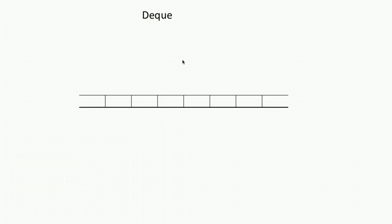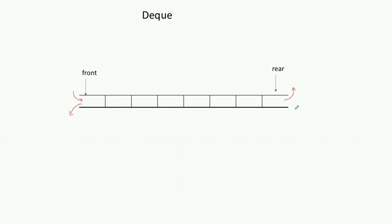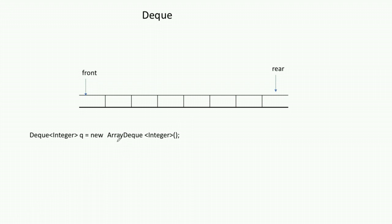Before moving towards the solution, let's first discuss how DQ works. DQ is a double-ended queue where we can insert and remove from the rear as well as from the front. We can insert a value from the front and remove from the front, and similarly from the rear we can insert and remove. This instruction creates a DQ of type array; you can also create a DQ of type linked list.